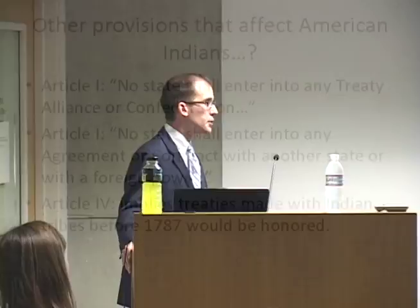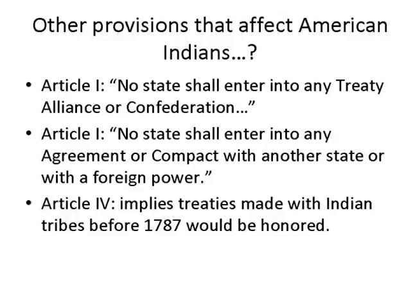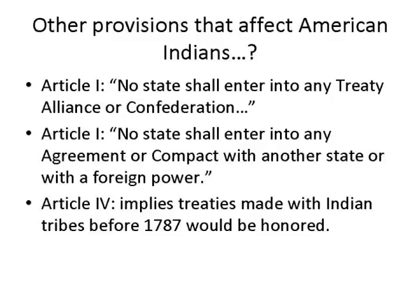Article I states that no state shall enter into a treaty, alliance, or confederation. What that means for Indian tribes is that states can't enter into treaties — that is the province of the federal government. So Indians would be dealing with the federal government in terms of treaty making; the states were largely out of the picture. Article I also says that no state shall enter into any agreement or compact with another state or a foreign power — so regardless how an Indian tribe was defined, other states could not make agreements with the tribe.